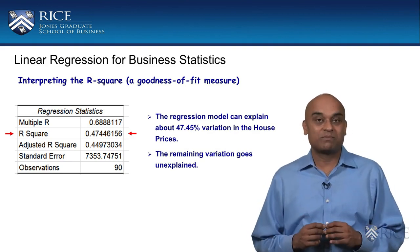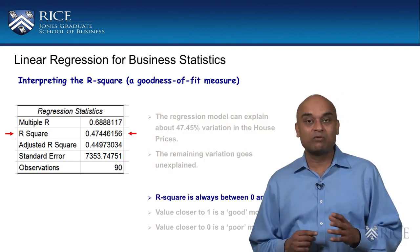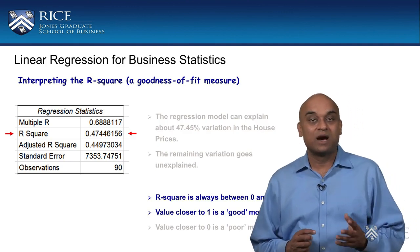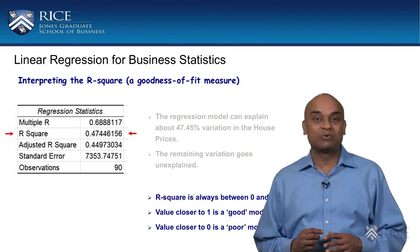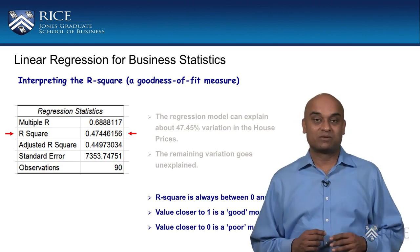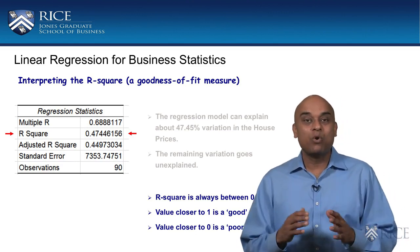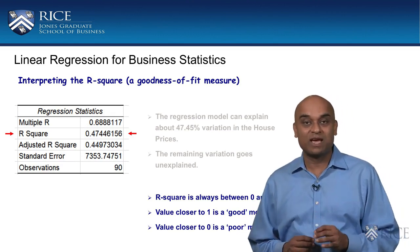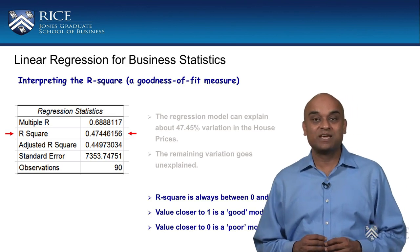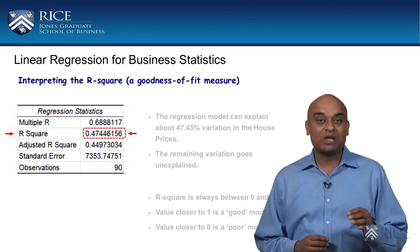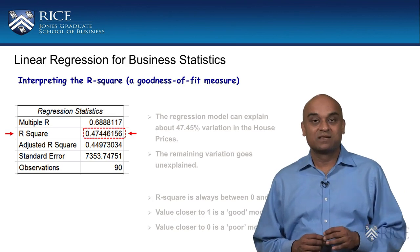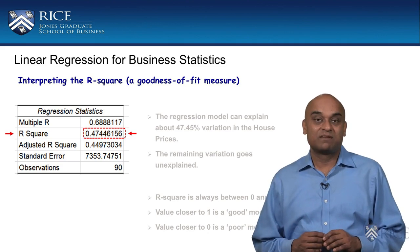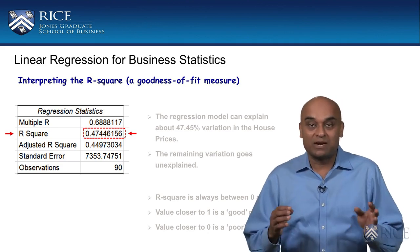A few more points about R square. The R square value is always between 0 and 1. A value closer to 1 implies a good fitting model, while a value closer to 0 implies a poor fitting model. Unfortunately, there is no one value above which you can claim the model is good fitting and below which you can say it is poor fitting. The value we get, 0.4745, is not that high and the fit of the model to the data may not be that good.